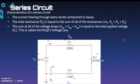Let's take a look at the characteristics of a series circuit. Current flowing through every series component is equal. The total resistance RT is equal to the sum of all of the resistances: R1 plus R2 plus R3. The sum of all the voltage drops — VR1, VR2, VR3 — is equal to the total applied voltage. This is called Kirchhoff's voltage law.